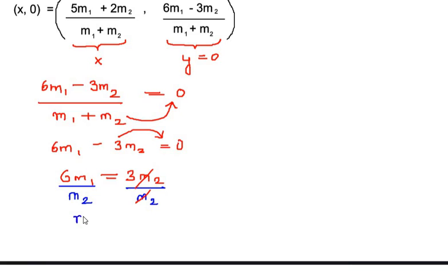And now let us take the 6 on the other side of equal sign. We get m₁/m₂ is equal to 3/6, which can be further reduced as 1/2. So that means m₁ is equal to 1 and m₂ is equal to 2.